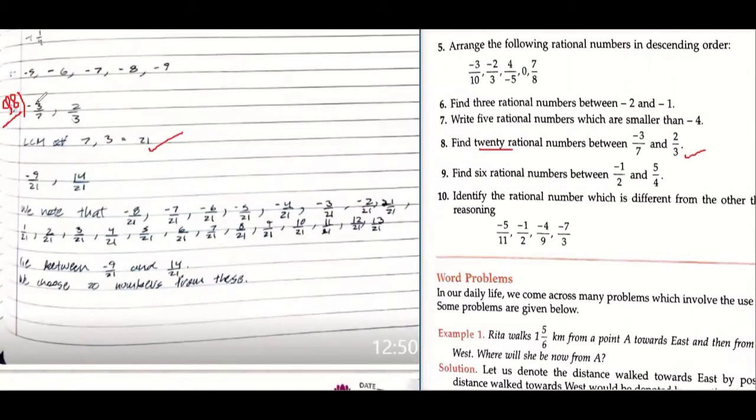Minus 7 upon 3 becomes minus 9 upon 21, and 2 upon 3 becomes 14 upon 21. Between these two there are many numbers. Let's see how to count them. If I just draw 0 here...